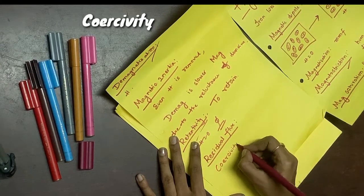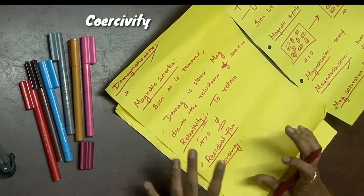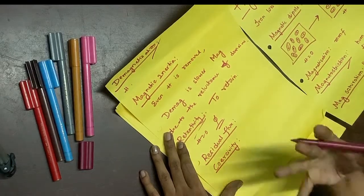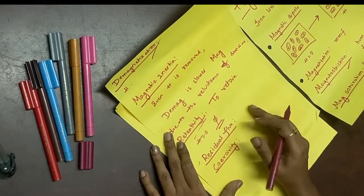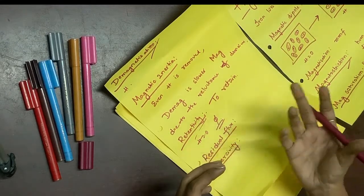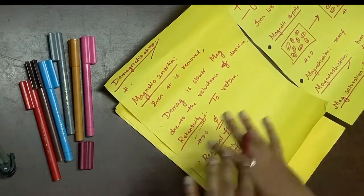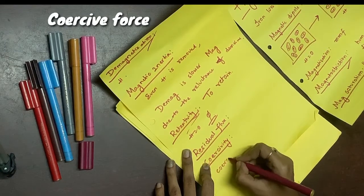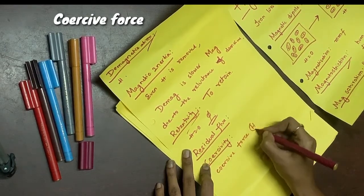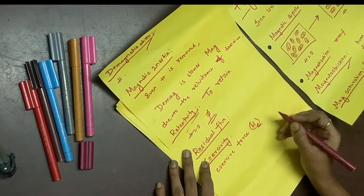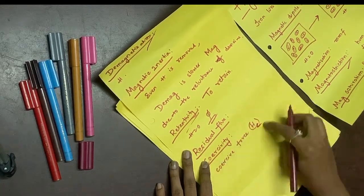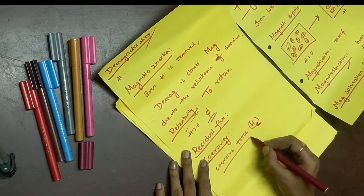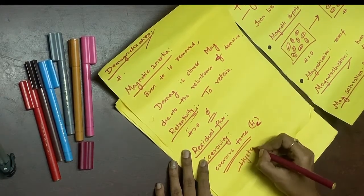In order to remove this residual flux from the material, additional H must be applied in the reverse direction. This property of a magnetic material, due to which additional H needs to be applied to remove the residual flux completely, is called coercivity, and that force is called the coercive force. This coercive force is the additional MMF that is wasted unnecessarily, and it is the cause of hysteresis loss.